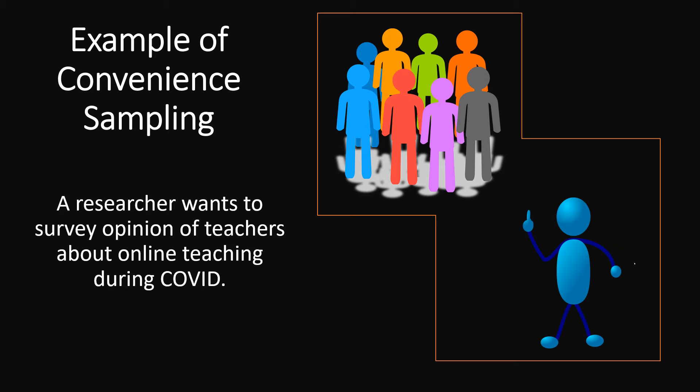To give more clarity, let me discuss one example. A researcher wants to survey the opinion of teachers about online teaching during COVID. In this research problem, the target population is unknown or not defined, as teachers across the world experienced online teaching due to the COVID pandemic. There can also be travel restrictions due to COVID. In this situation, it is best practice to select samples through convenience sampling — the researcher will collect data from teachers who are close to hand and easily accessible, maybe from their own institute or from nearby institutes.